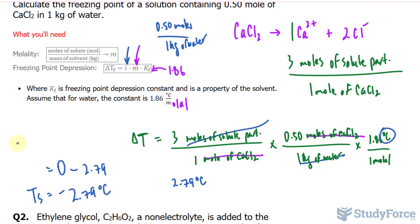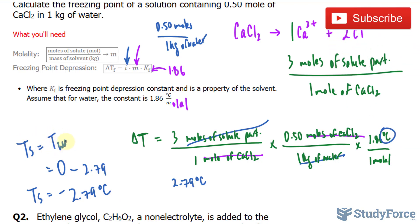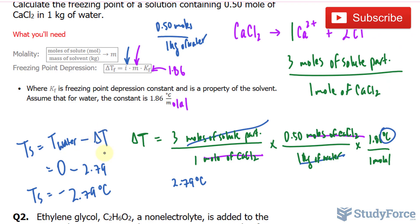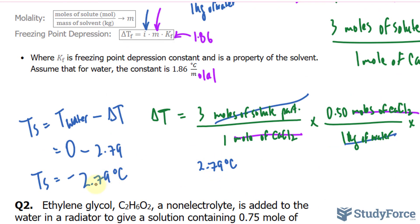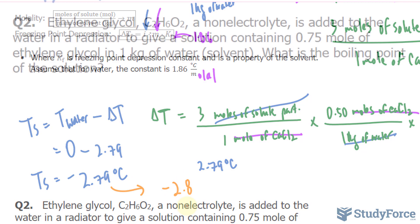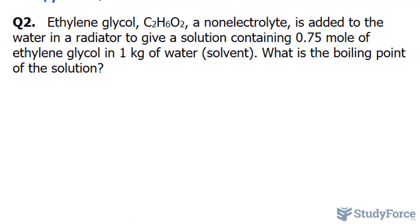So just to recap, the temperature of the solution equals the freezing point of water minus the change in temperature that we found. Also keep in mind that negative 2.79 should be rounded to two significant figures, so make sure that you write down negative 2.8 as your final answer. That's the answer to question number one.